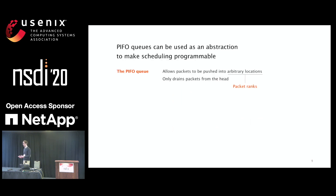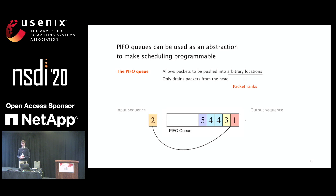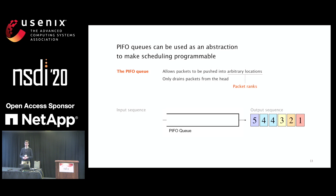PIFO queues allow packets to be pushed into arbitrary positions while only draining packets from the head. These arbitrary positions are defined by packet ranks, which can be understood as priorities — the smaller the rank, the higher the priority. For example, with a PIFO queue containing packets with ranks one to five, a new packet arriving with rank two will be pushed between packets with ranks one and three, following the relative order defined by its rank. Then the PIFO queue drains packets from the head.